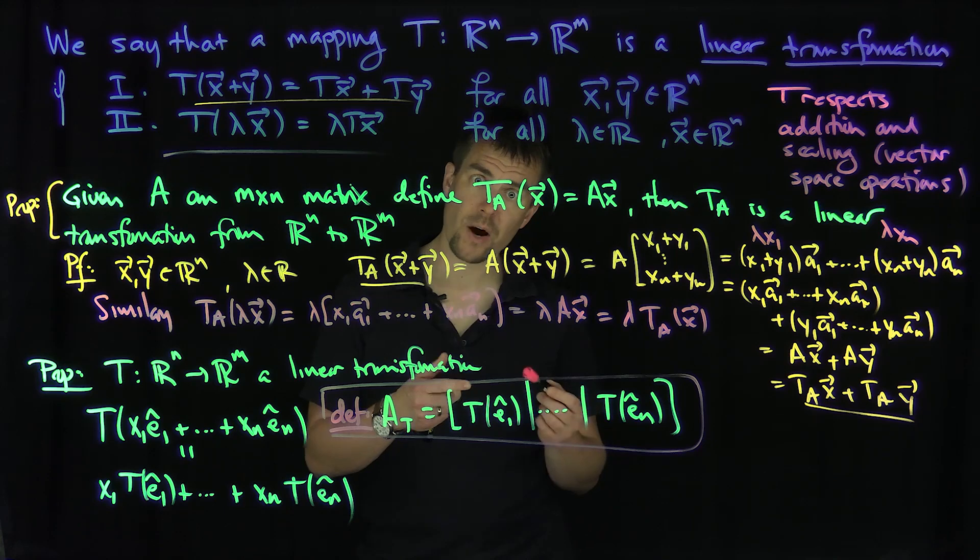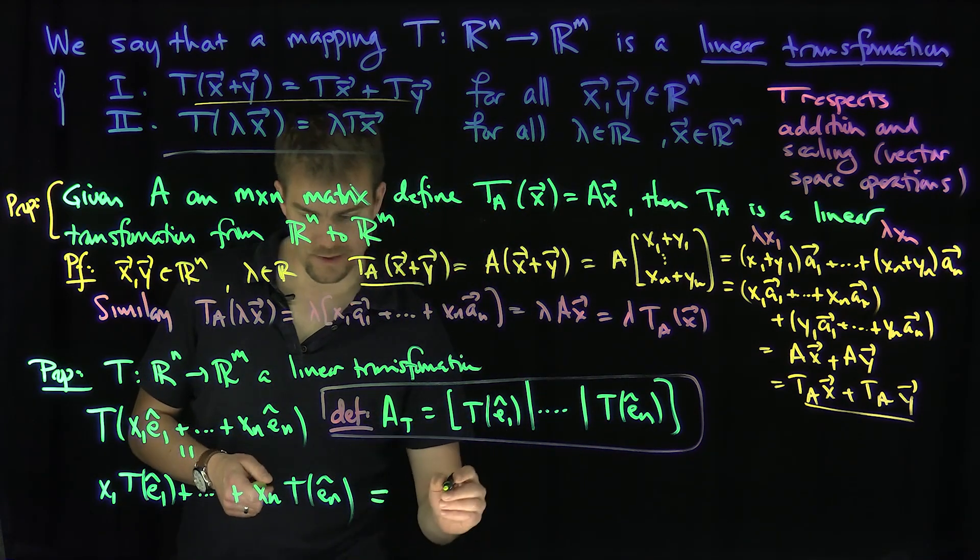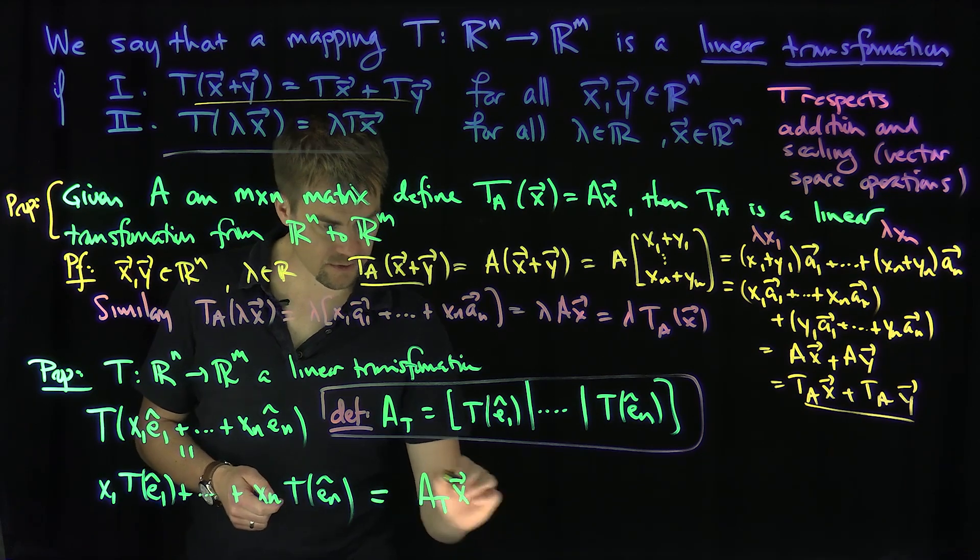Then if we define A_T in this way, what can we say? We can say that then this implies that this will be equal to what? This is exactly equal to A_T of x. So in other words.